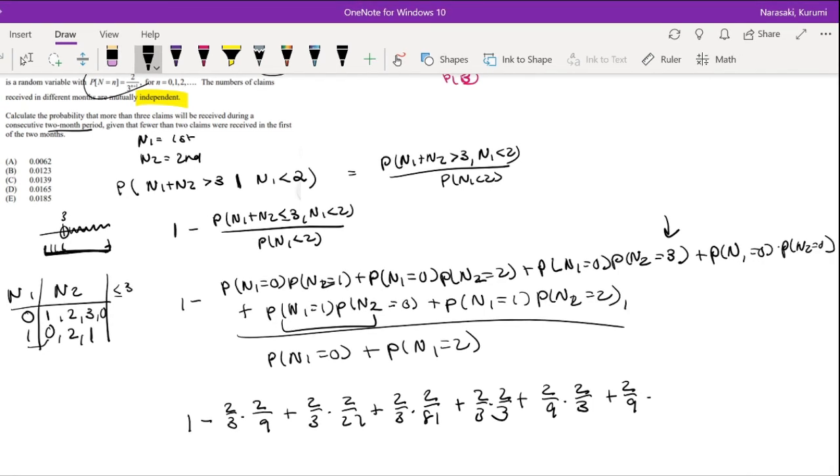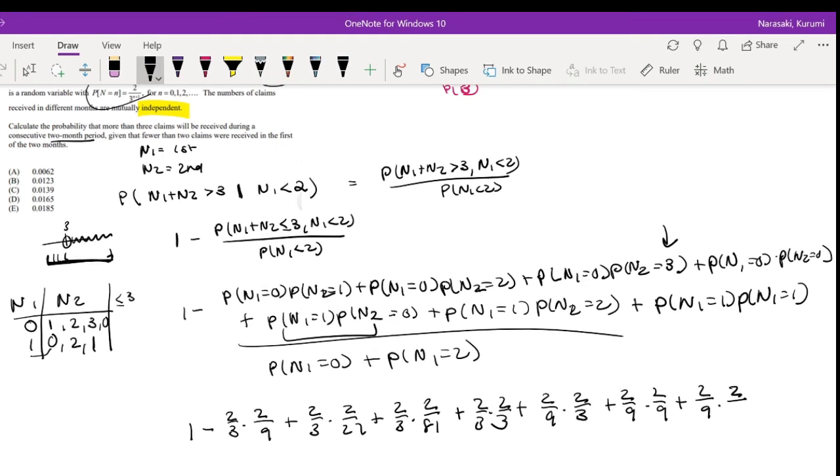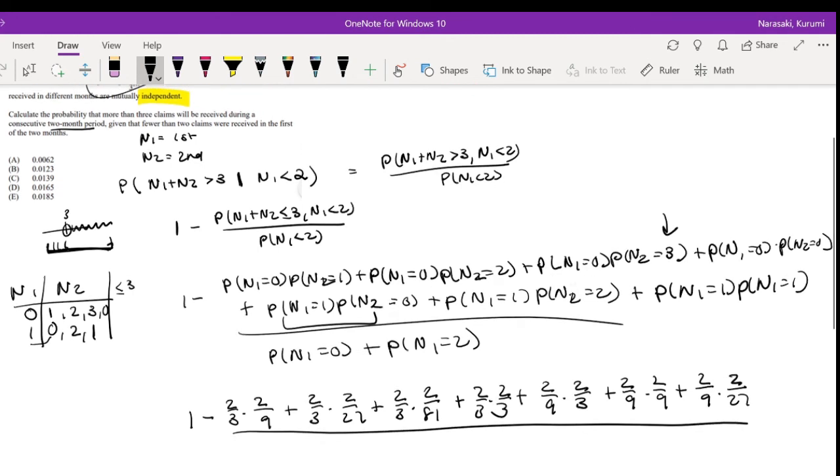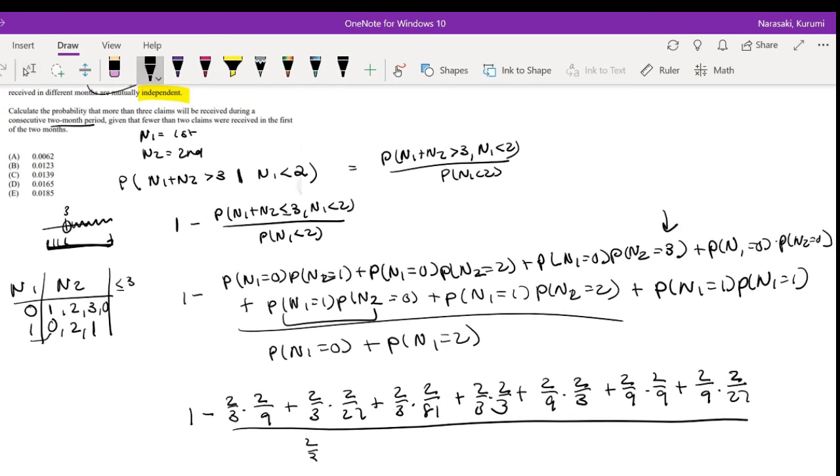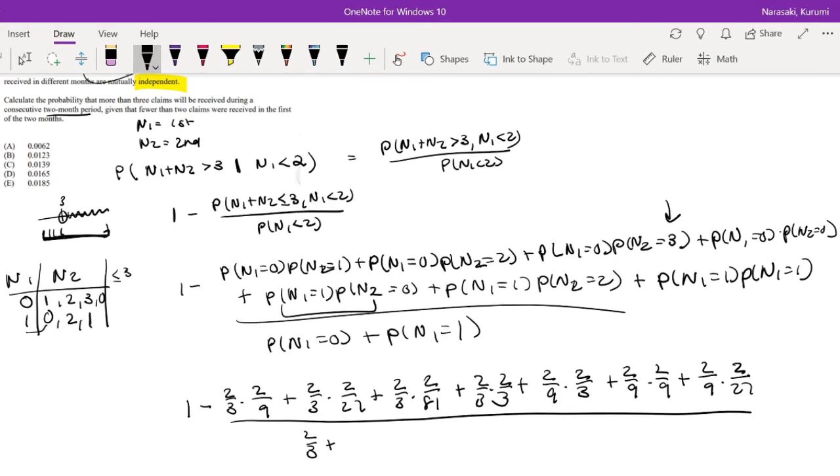I'm missing a value here. Plus probability of n1 equals 1 and probability that n2 equals 1 as well, so this is 2/9 times 2/9, plus 2/9 times 2/27. Divided by n1 is equal to 0, that's 2/3, plus n1 is equal to 1, that's just equal to 2/9.